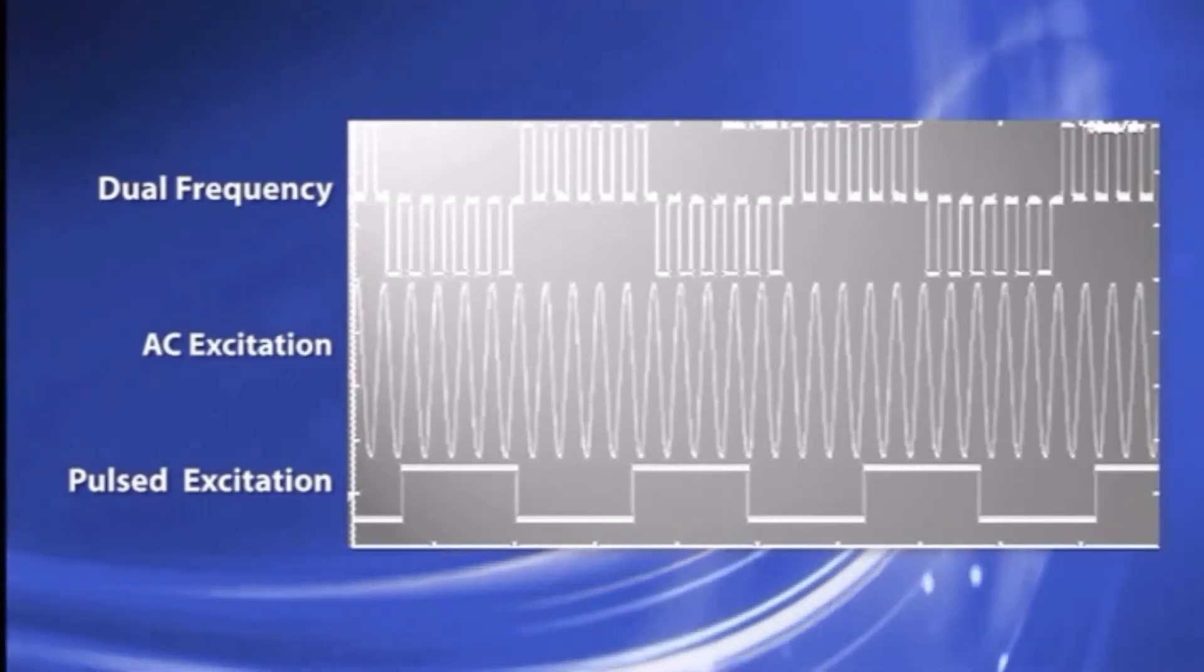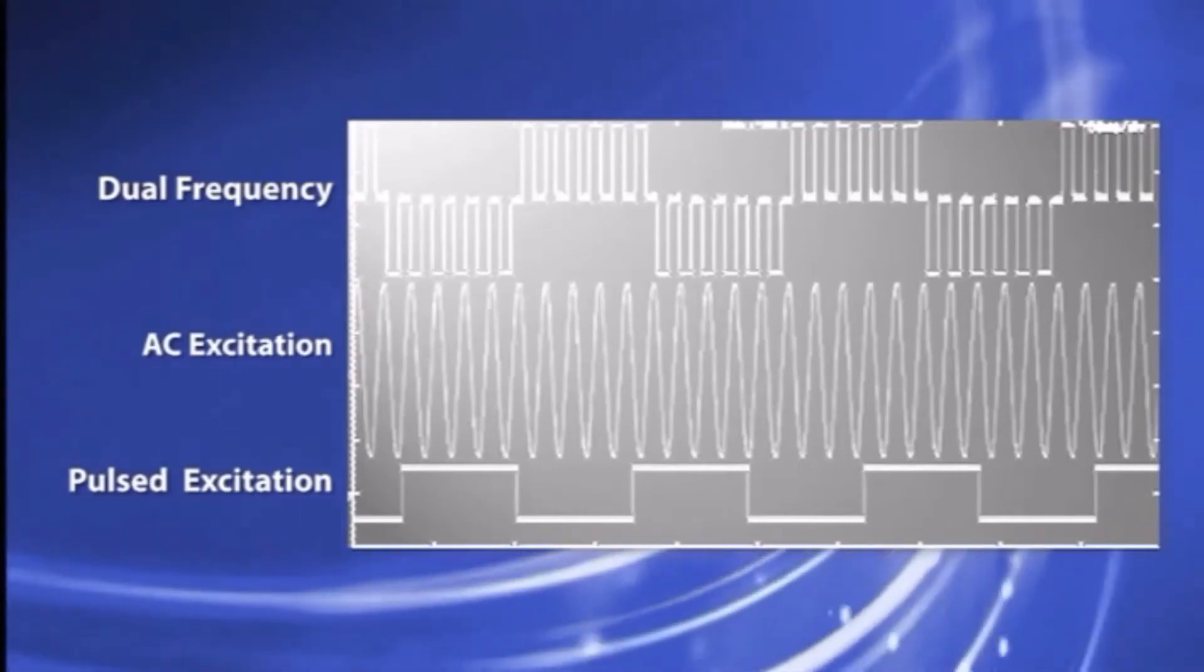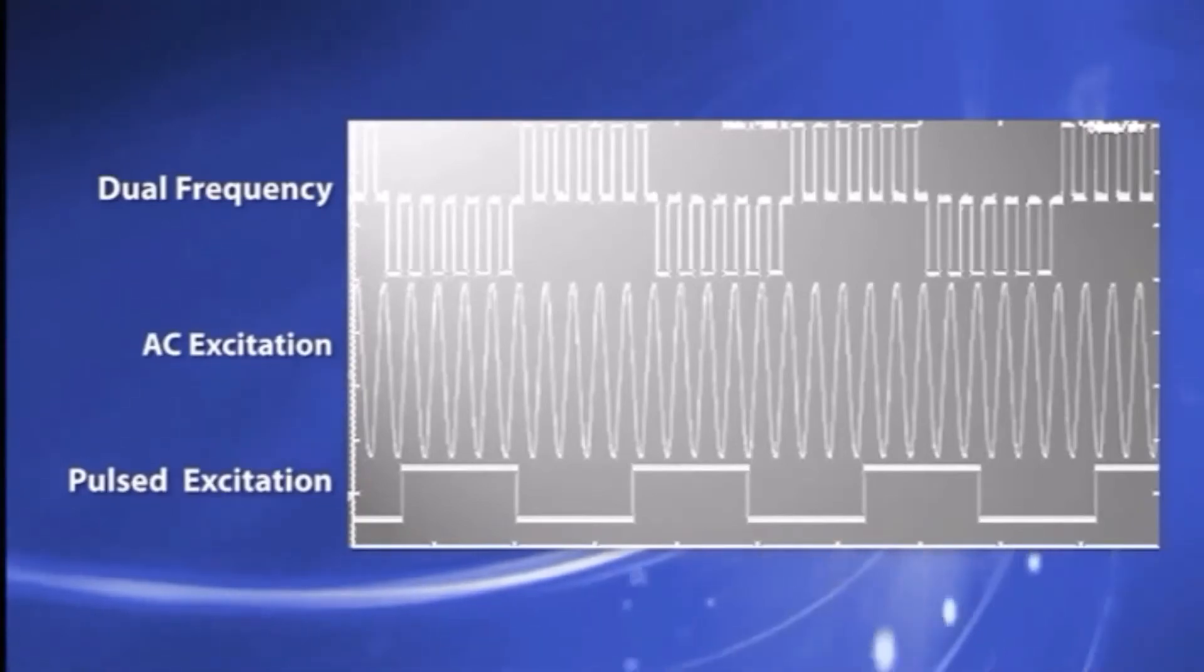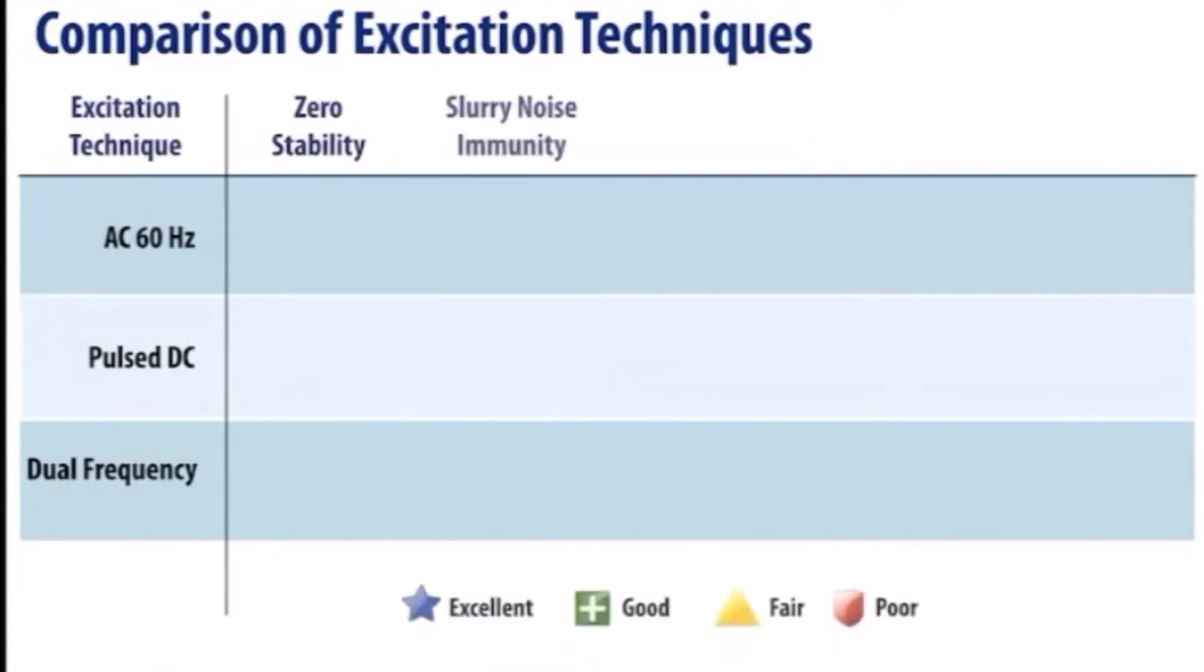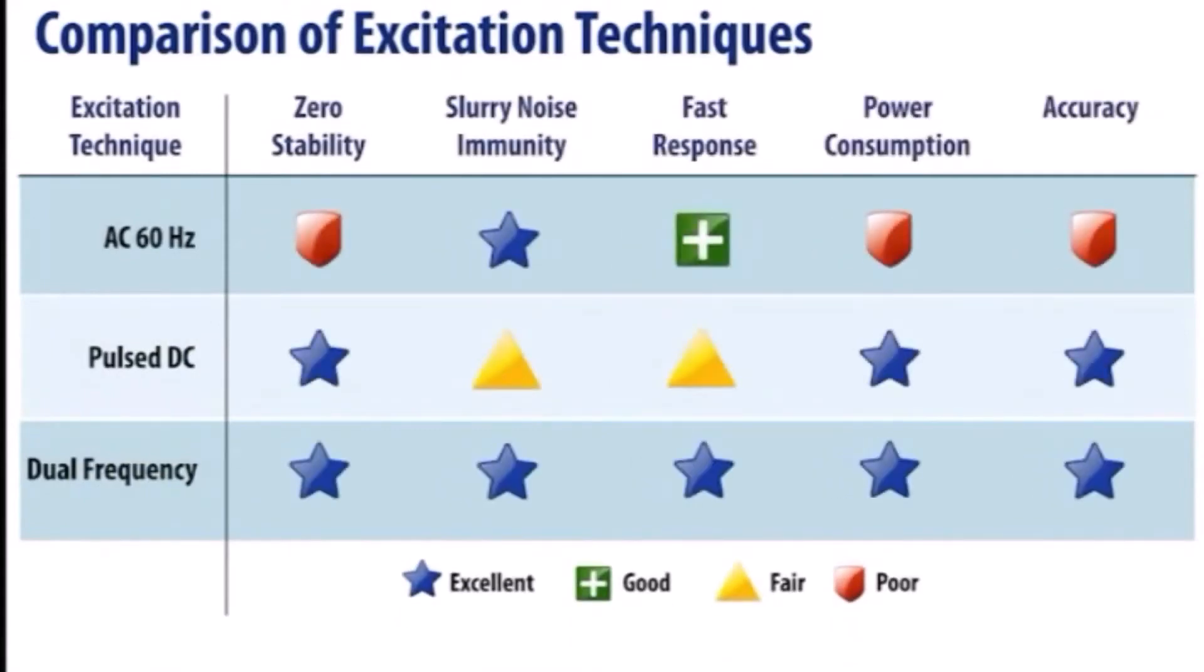Dual frequency excitation is an innovative method that superimposes high frequencies on low frequencies and utilizes the advantages of each while eliminating the previously discussed disadvantages. The combination of these methods results in the flow noise immunity and fast response of the high frequency excitation method and the high zero stability of the low frequency excitation method simultaneously.